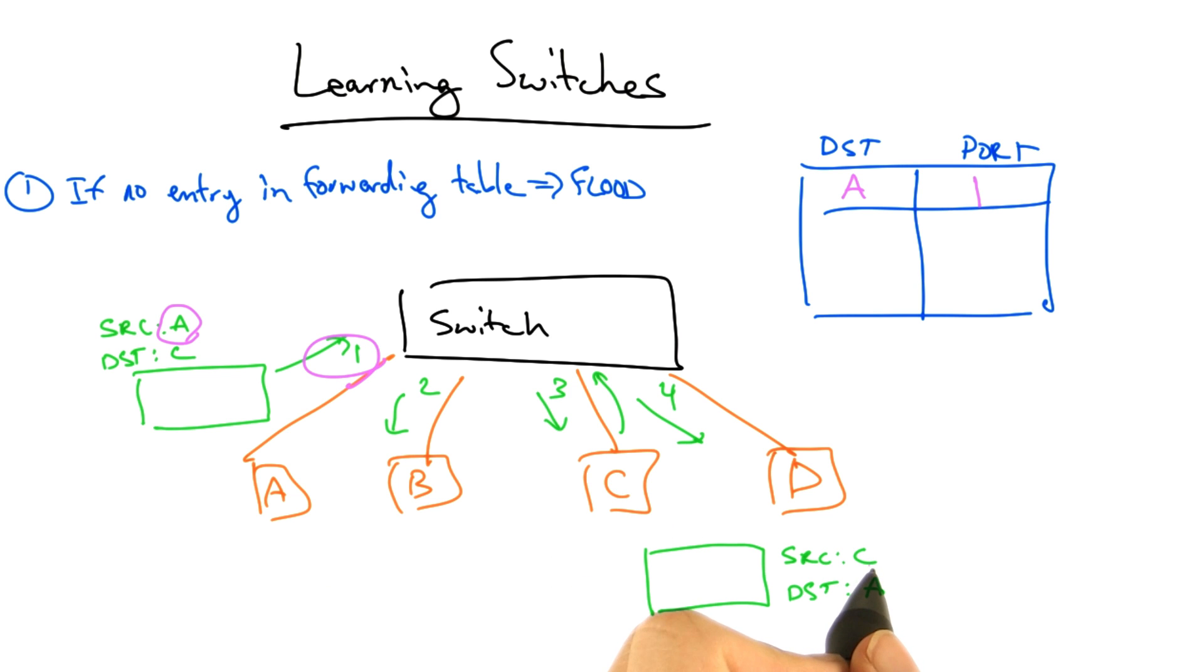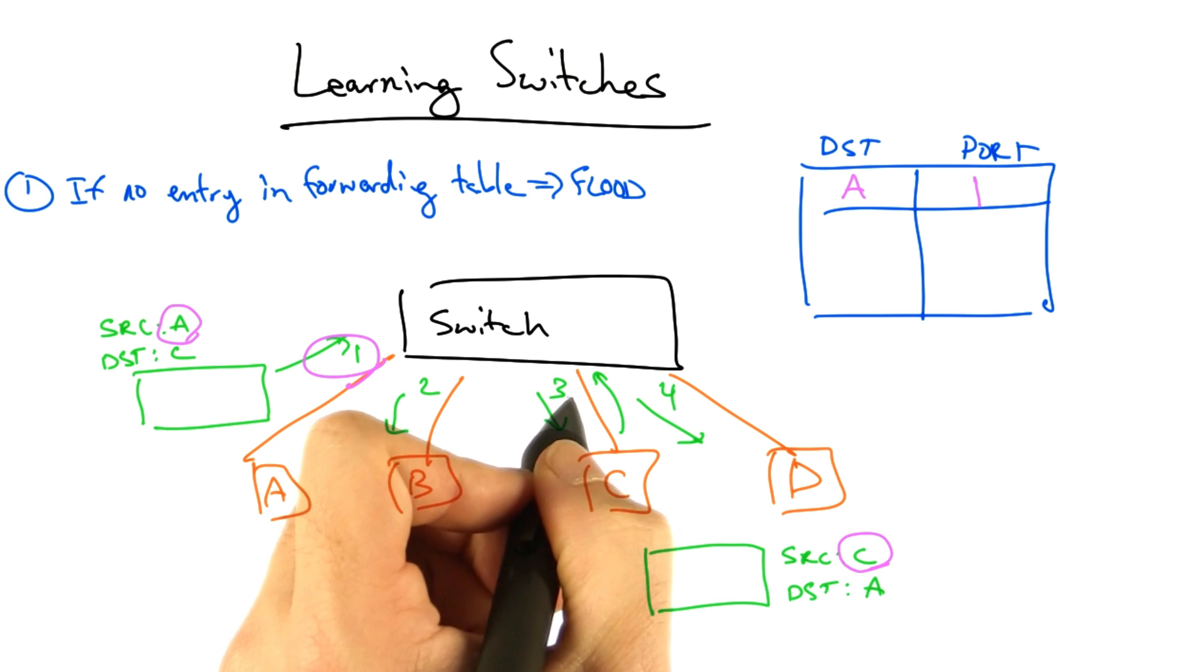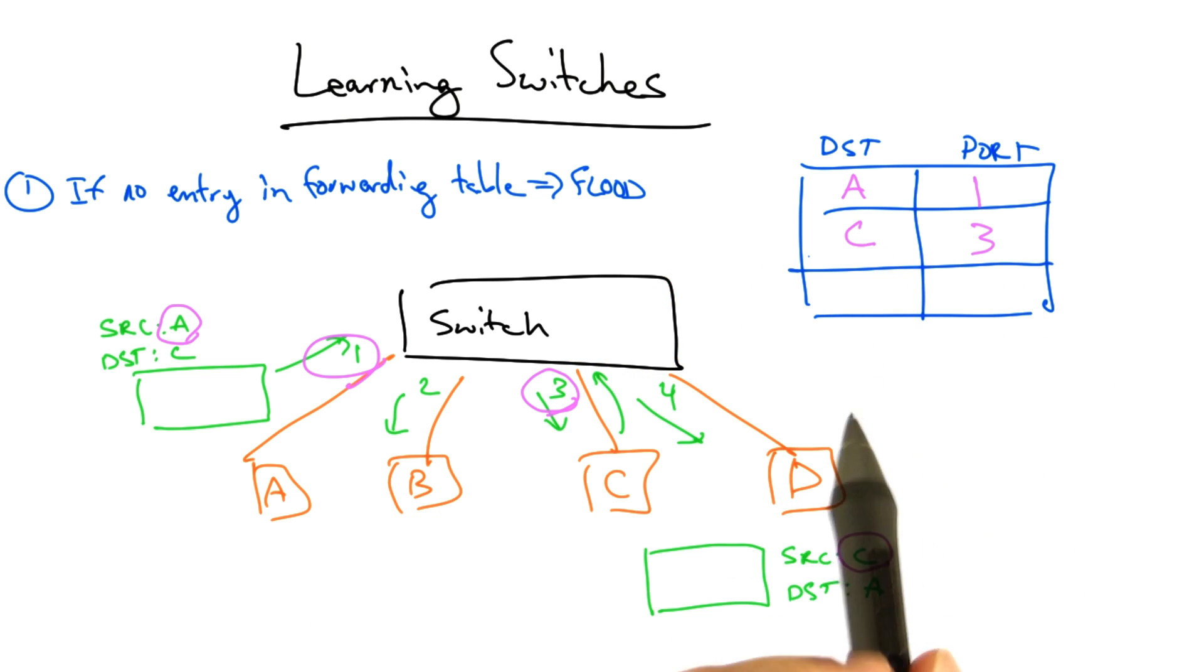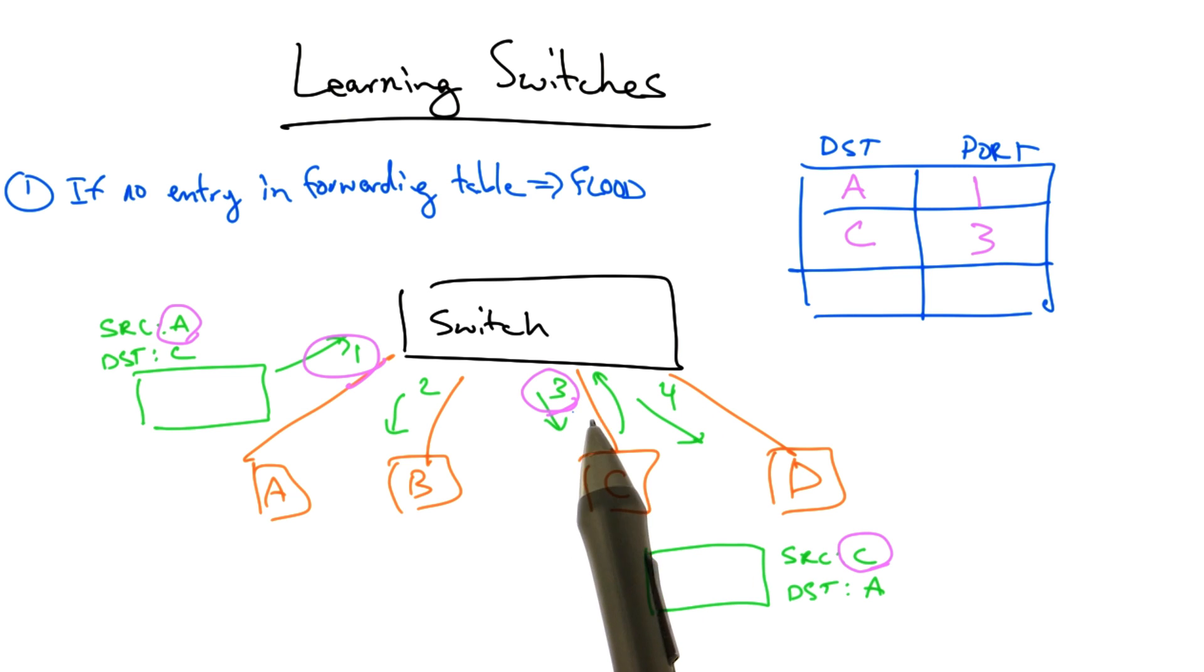Note also that when C replies, the switch learns another association between address C and port 3. So future frames destined for host C no longer need to be flooded either. They can simply be forwarded to output port 3.